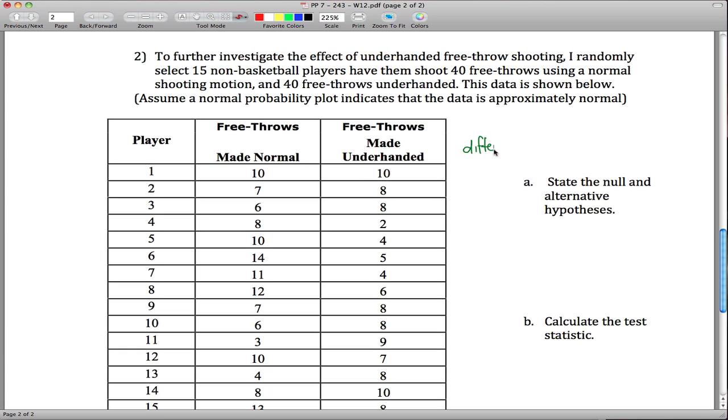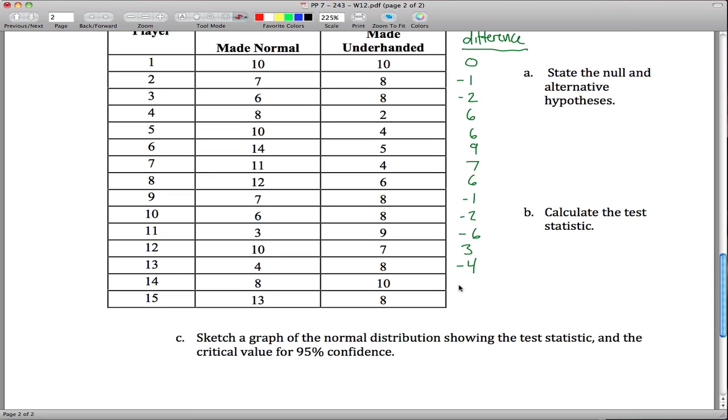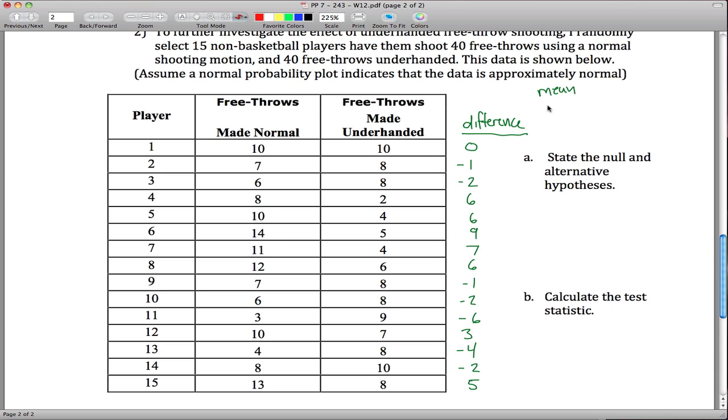So 10 minus 10, so what I want to do, what you want to do in cases like this is you want to create another column that's the difference. So 10 minus 10 is 0, 7 minus 8 is negative 1, 6 minus 8 is negative 2, 8 minus 2 is 6, 10 minus 4 is 6, 14 minus 5 is 9, 11 minus 4 is 7, 12 minus 6 is 6. Probably screw up one of these at some point. Maybe it would be smarter to do this in your calculator, you could enter this all into lists, 8 minus 10 is negative 2 and 5.